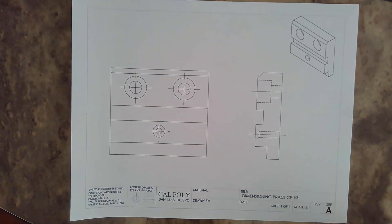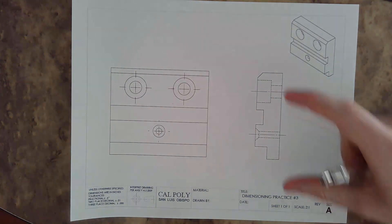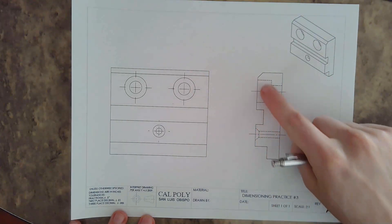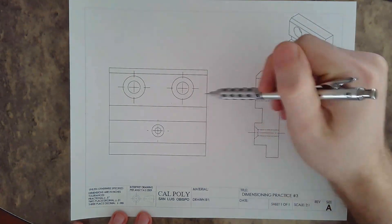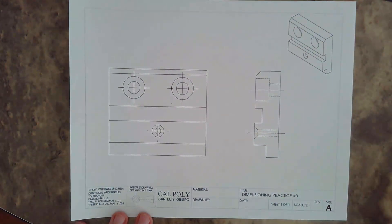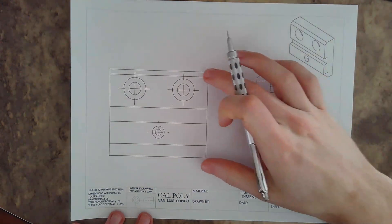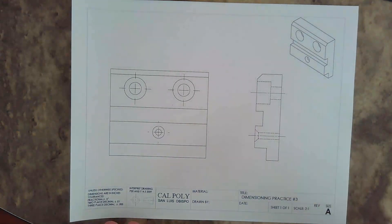To begin, I'm going to start by dimensioning the overall block dimensions, then step in a layer and dimension all these details, then the hole locations and hole callouts. I'm going to apply the contour rule, which states that we place the dimension where we can see the feature best. Part of that rule is placing the dimensions between the views as much as possible. The key here is to make sure the drawing looks neat when completed.